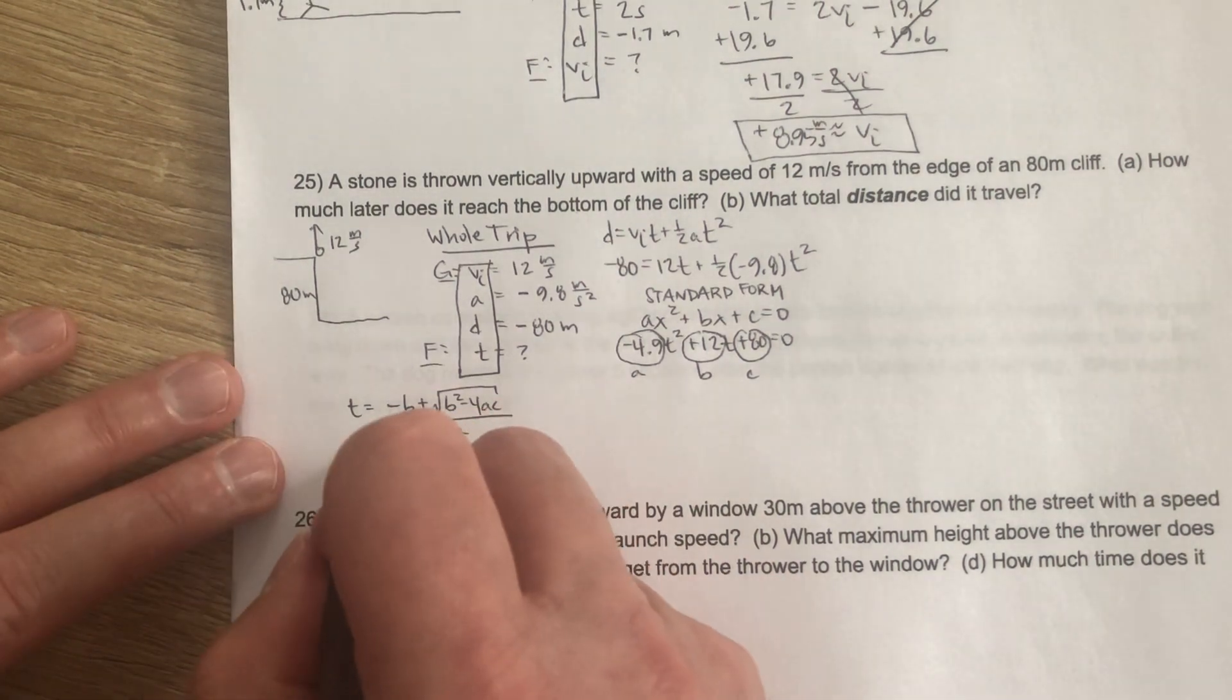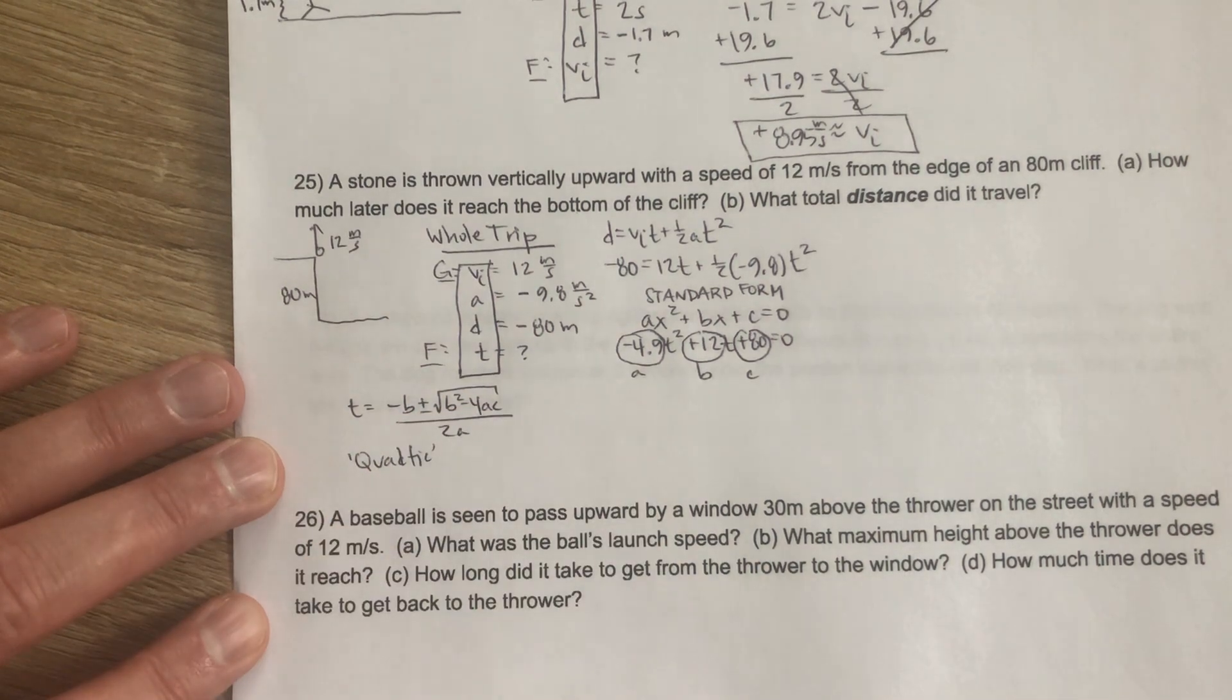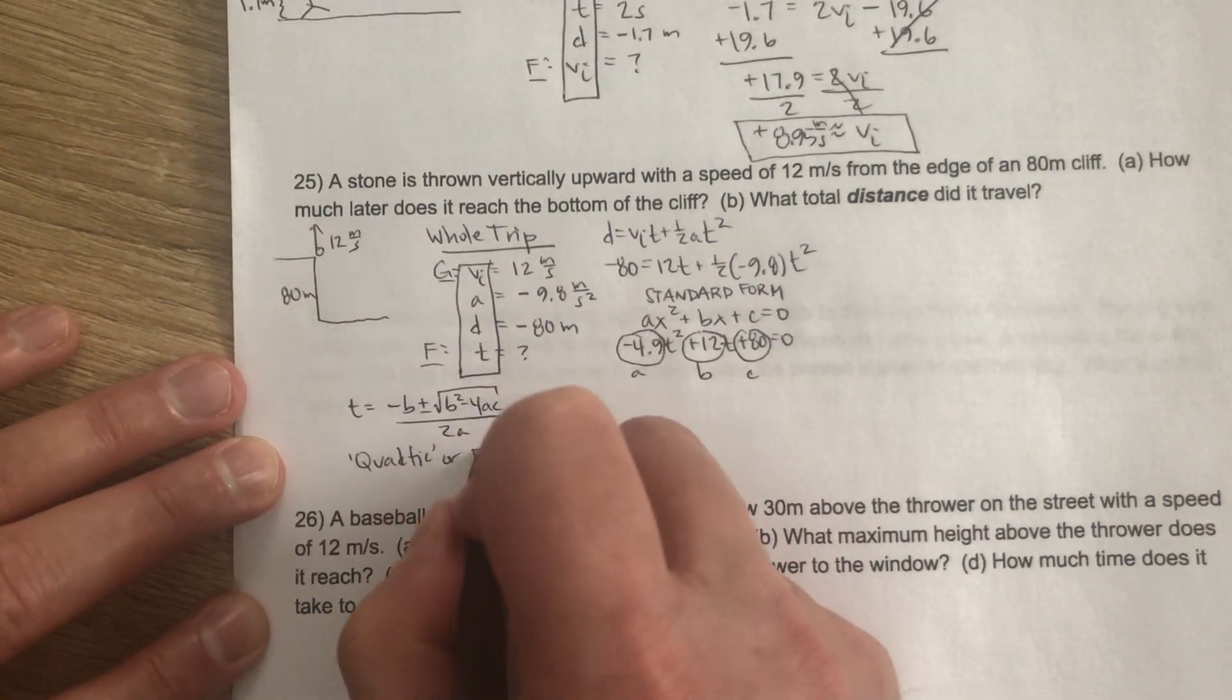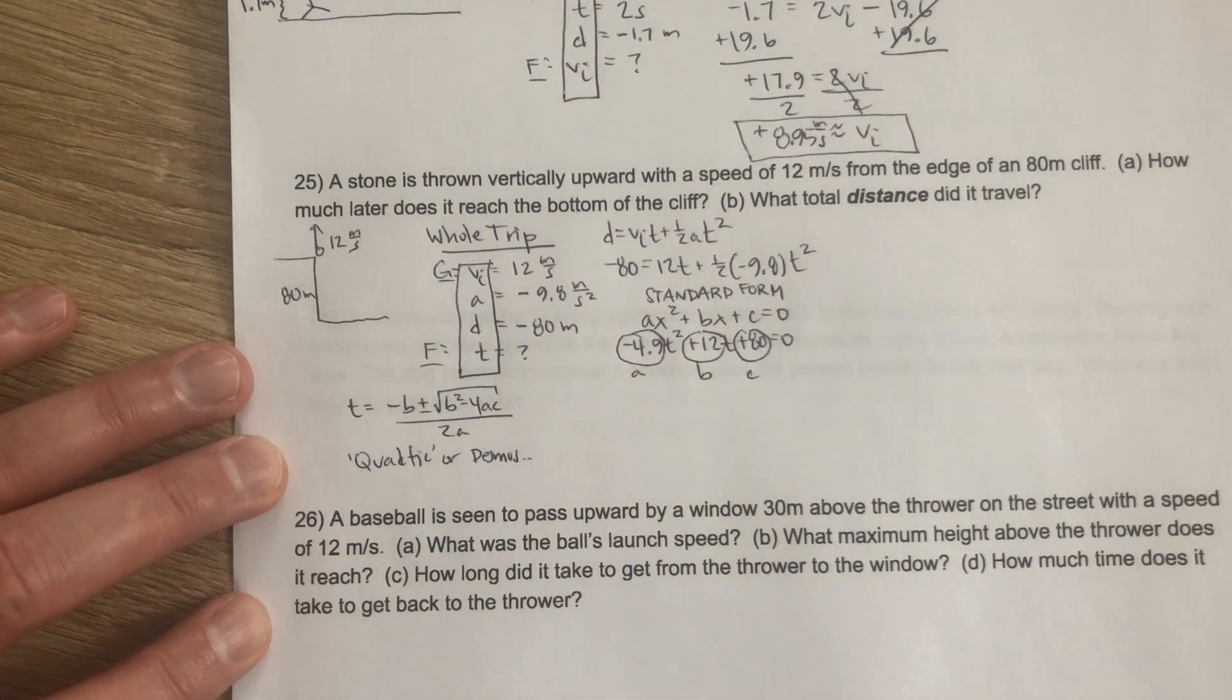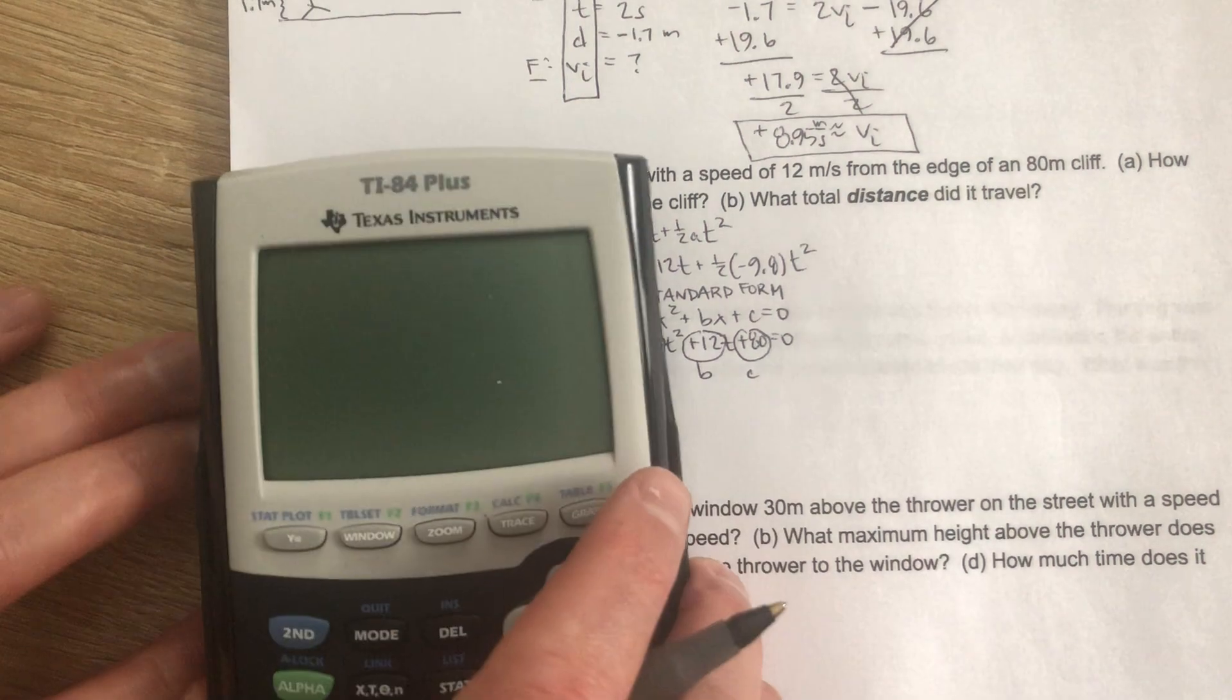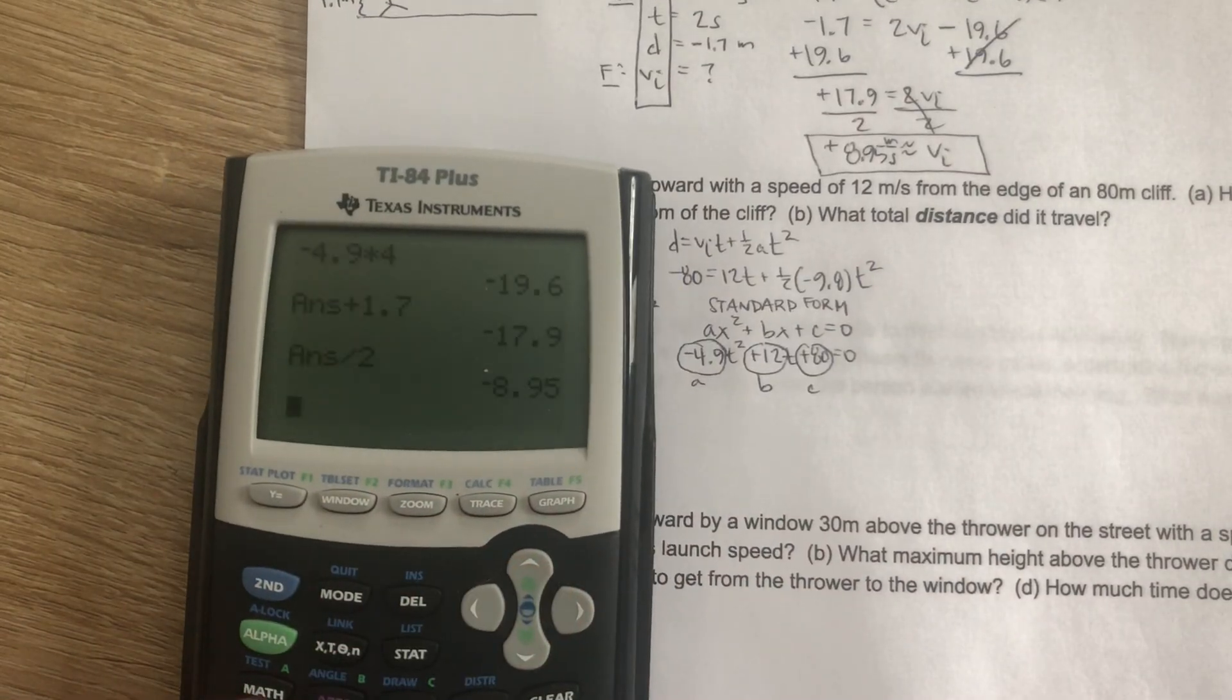So to save a little time, we can either use the QuadTIC graphing calculator program to do this for us, or Desmos, and then pull the relevant information that we're looking for off of the graph. So I'm going to use the QuadTIC program in the calculator here. So under program, QuadTIC, short for quadratic.